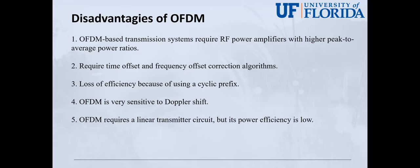Of course, there are many disadvantages of OFDM. OFDM-based transmission systems require RF power amplifiers with higher peak to average power ratio, because OFDM signal has a larger dynamic range due to its noise-like amplitude. It also requires time offset and frequency offset correction algorithm, because it's prone to inter-symbol interference and inter-carrier interference.